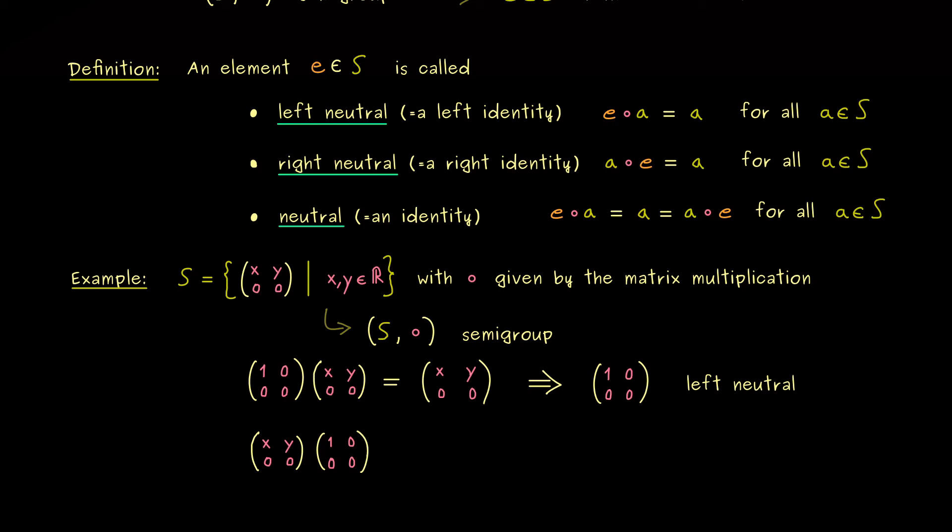And then we just get x 0 in the first column and 0 0 in the other one. And now you see this is in general not the output we expect from a right neutral element.